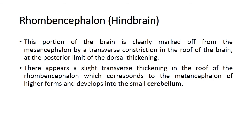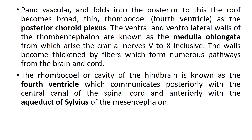The rhombencephalon, or hindbrain, is clearly marked off from the mesencephalon by a transverse constriction in the roof of the brain. A slight transverse thickening in the roof corresponds to the metencephalon of higher forms and develops into a small cerebellum. The ventral and ventrolateral walls of the rhombencephalon form the medulla oblongata, from which arise cranial nerves 4 through 10. The rhombocele, or cavity of the hindbrain, is known as the fourth ventricle, which communicates posteriorly with the central canal of the spinal cord and anteriorly with the aqueduct of Sylvius.